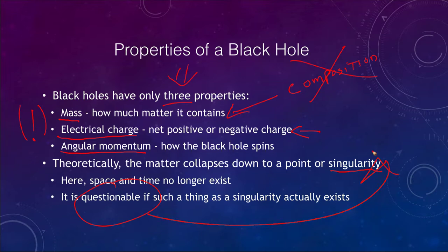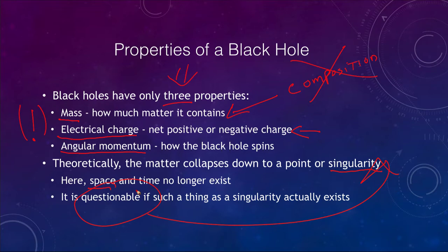Theoretically a black hole collapses down to a singularity, but does this really exist? Many astronomers will tell you that the idea of a singularity is questionable. We don't really know what happens inside the black hole — will it actually condense down to a point, or is there something else that will stop it? It doesn't change it from being a black hole, but it could change our exact understanding. One of the problems is that general relativity does not work on the quantum scale, so we need a theory that combines general relativity and quantum mechanics.